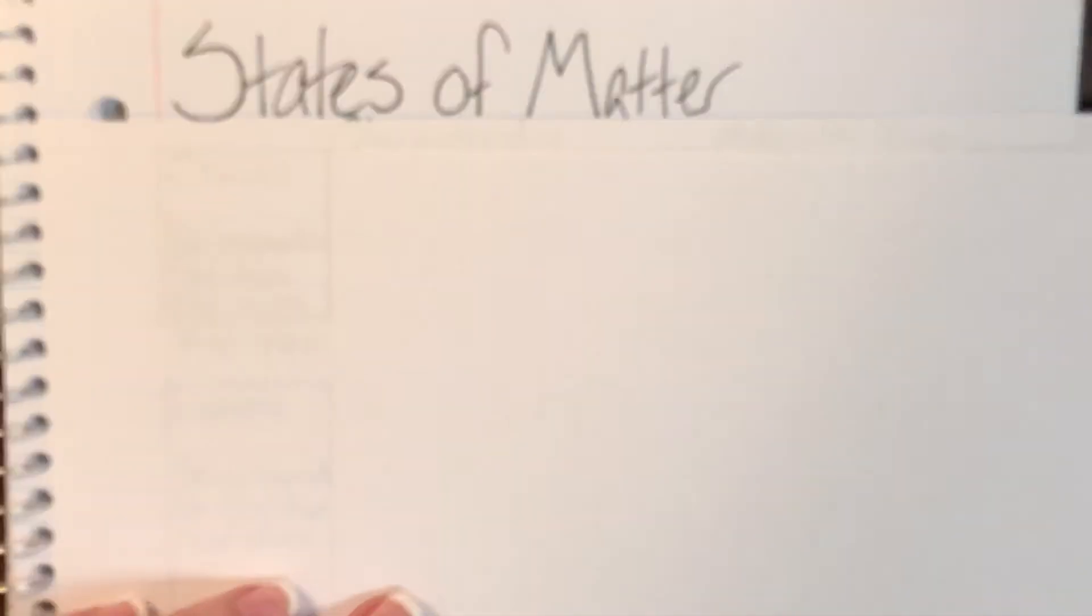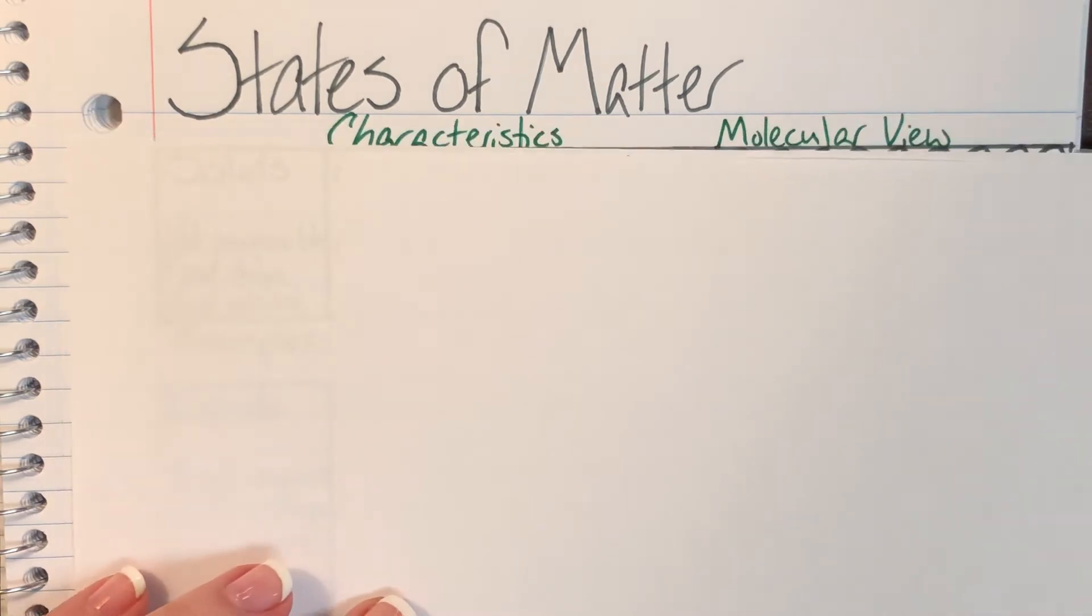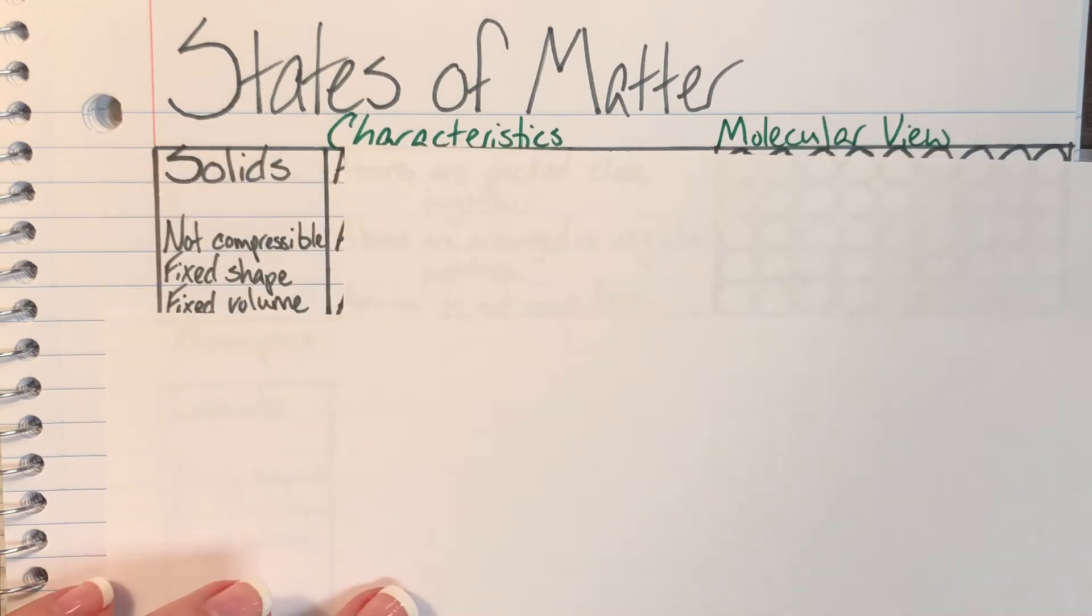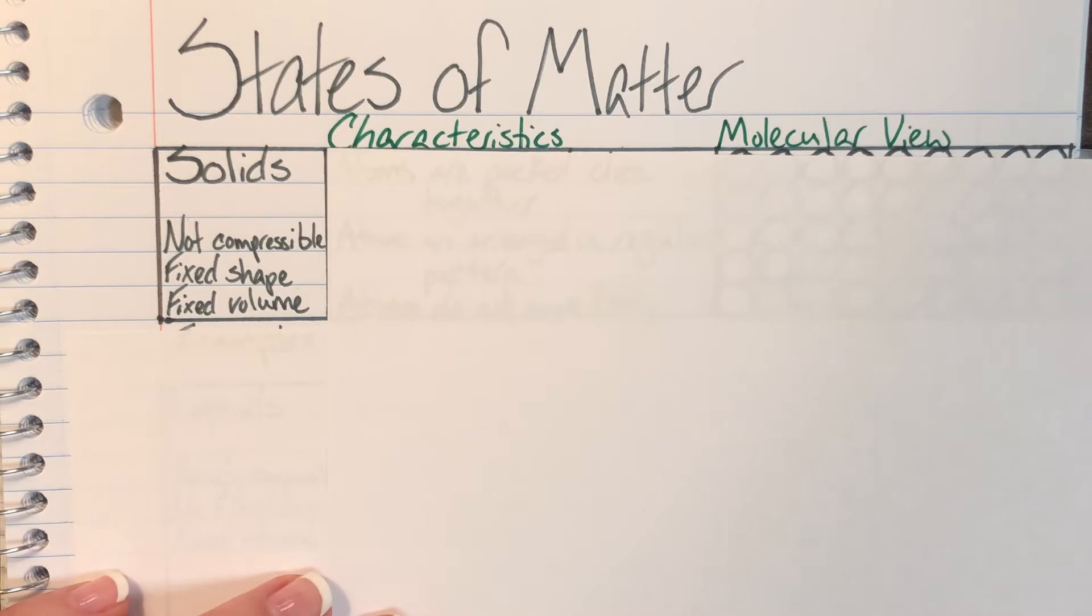The first thing that I want you to do is go ahead and label the top as characteristics and molecular view. These are going to be two of our columns and then our leftmost column will be whatever state of matter that we are currently talking about. So for our first state of matter that we will be discussing, we're going to be discussing solids.